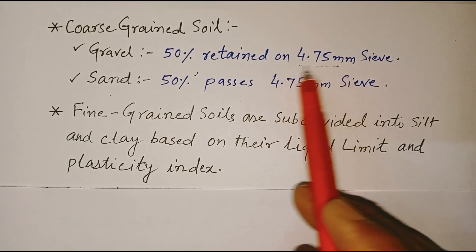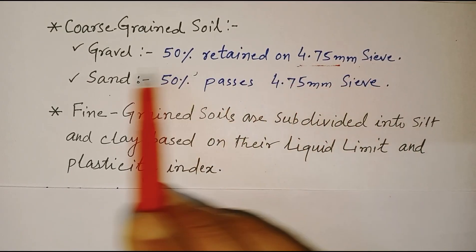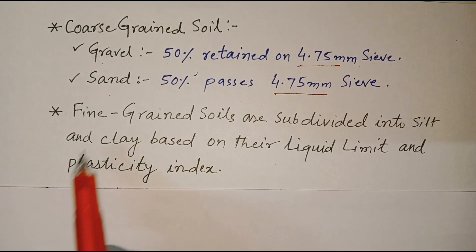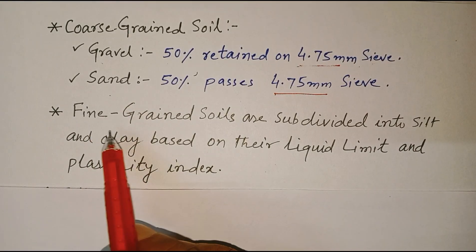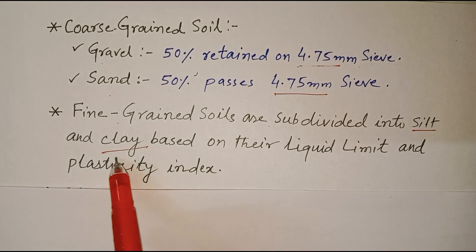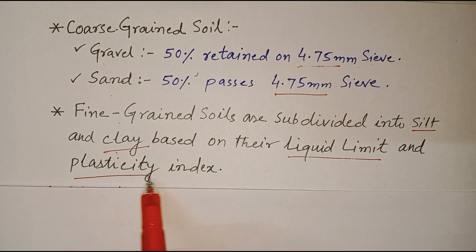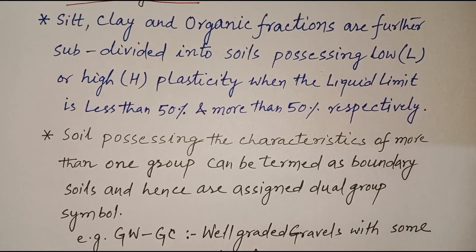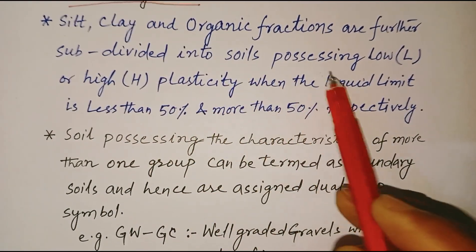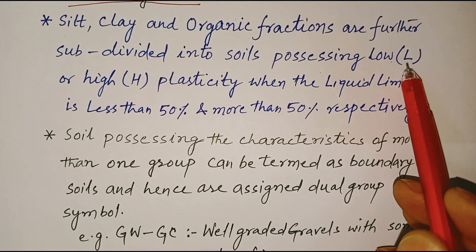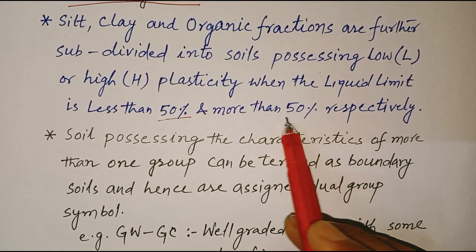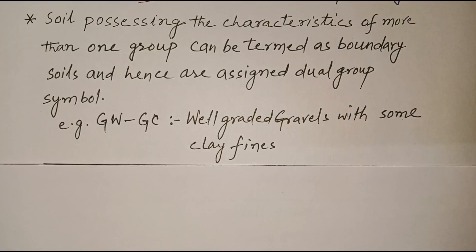Coarse grain soil is further classified into gravel and sand. If 50% is retained on the 4.75 mm sieve, then it is called gravel. Fine grain soils are subdivided into silt and clay based on their liquid limit and plasticity index. Silt, clay and organic fractions are further subdivided into soils possessing low (L) or high (H) plasticity, when the liquid limit is less than 50% and more than 50% respectively.